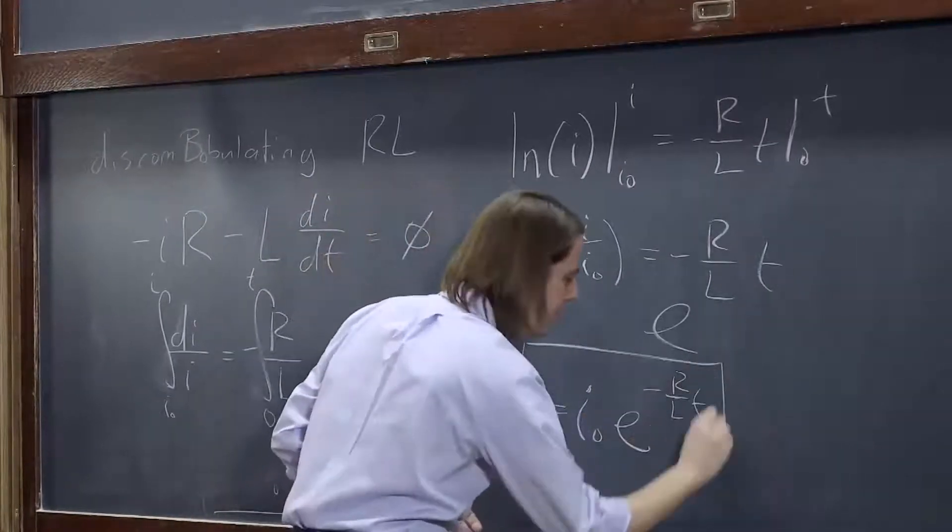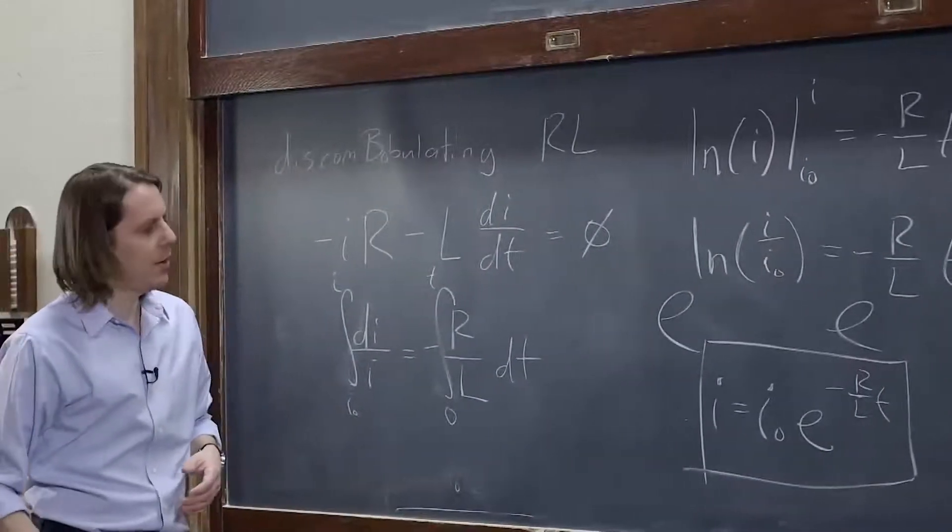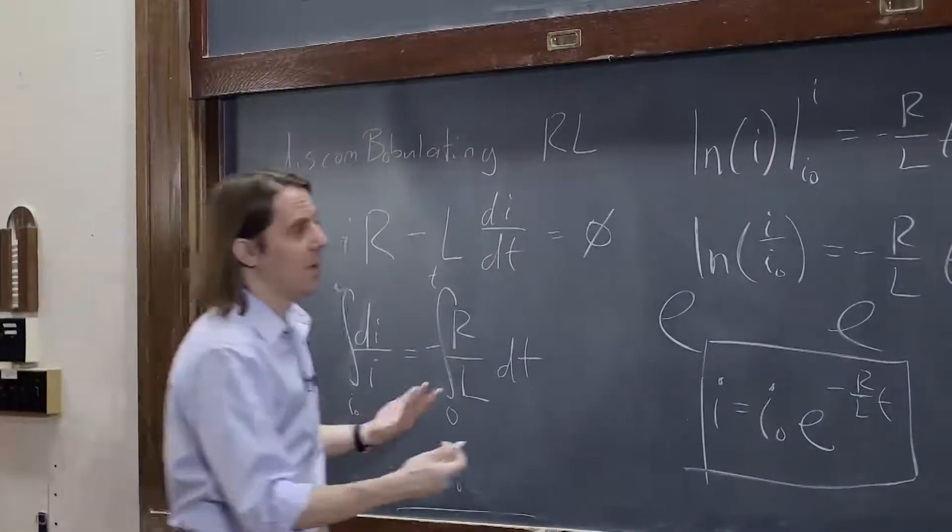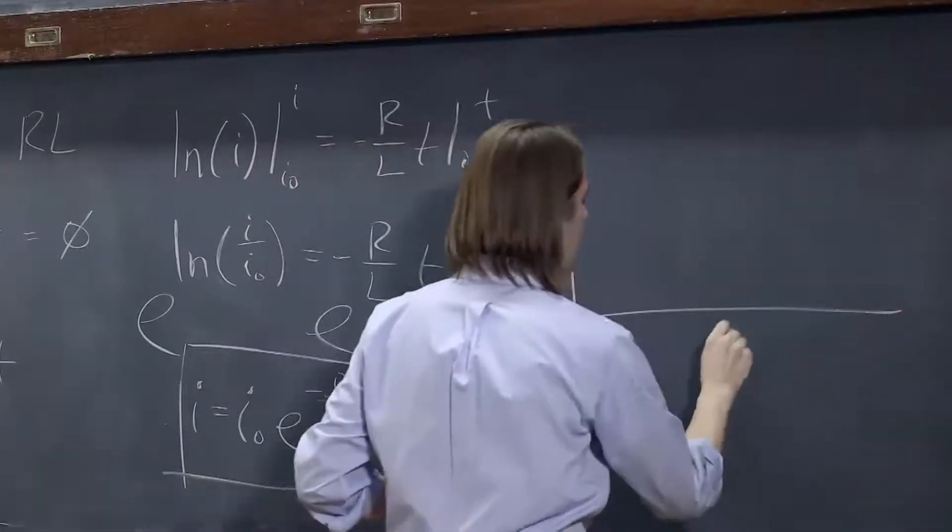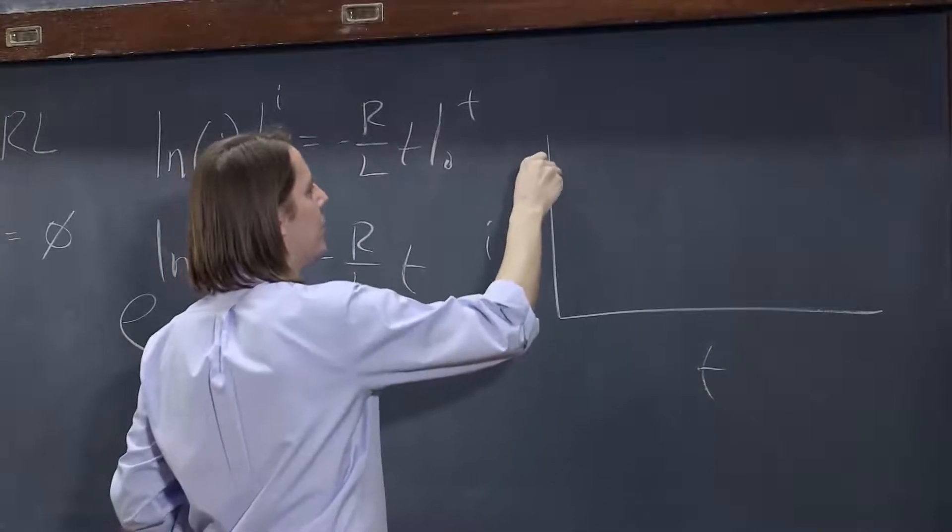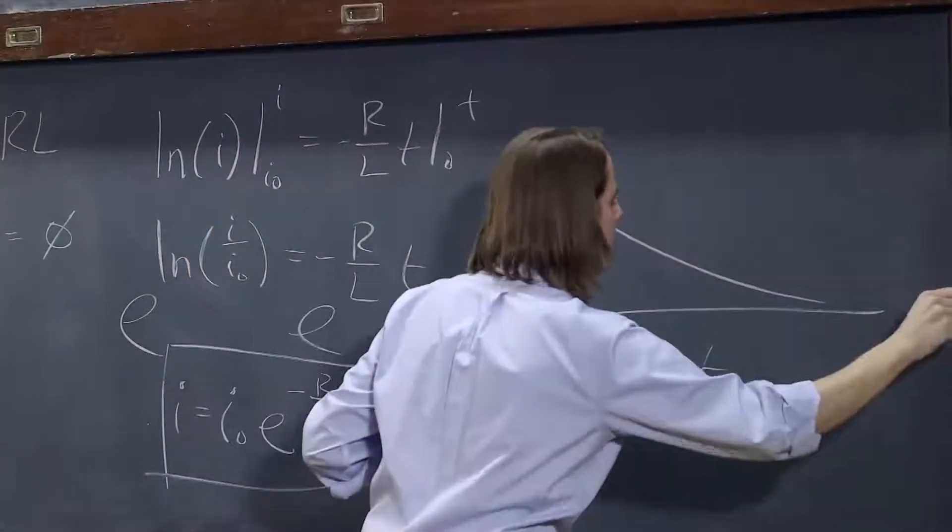So you find that it undergoes basic exponential decay. If we were to plot versus time and plot i, it starts at some value i0, and it just makes its way to zero.